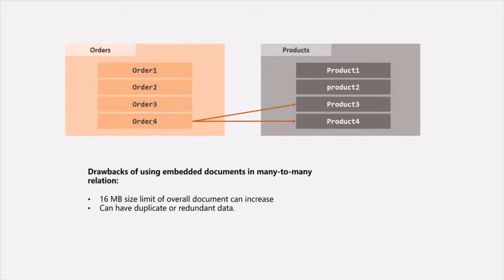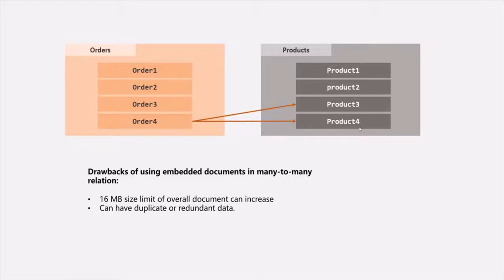Next, we can have duplicate or redundant data. In the same orders collection, different orders might have the same product purchased. For example, when the customer made the first order, he purchased product-1 and product-4. And when the customer made order-4, product-3 and product-4 were purchased. So product-4 is common to both order-1 and order-4, meaning we will have a duplicate entry for product-4, creating redundant data.